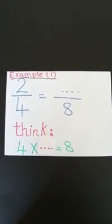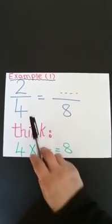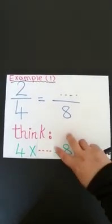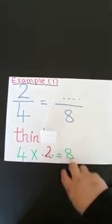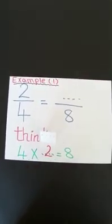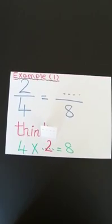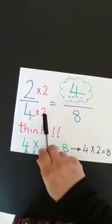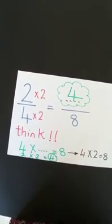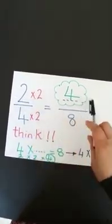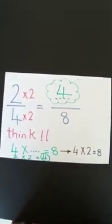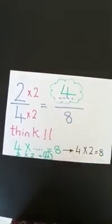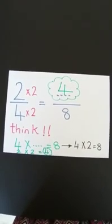The example here: 2 out of 4 equals what out of 8? The 4 became 8. Let us think: 4 multiplied by what gives 8? 4 multiplied by 2. So, we multiply the 4 by 2 to become 8. If we multiply the denominator by 2, we should also multiply the numerator by 2. So, we make 2 times 2, and we get that the missing number will be 4. We multiplied up and down by the same number — we multiplied up and down by 2 to get the missing number.